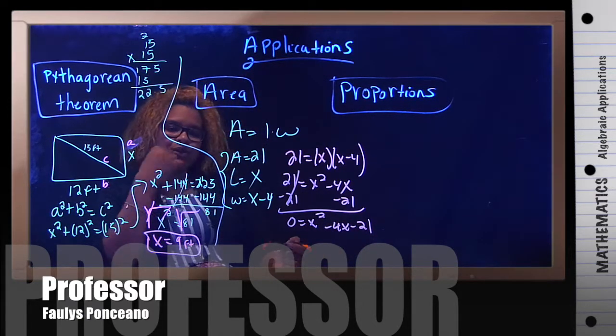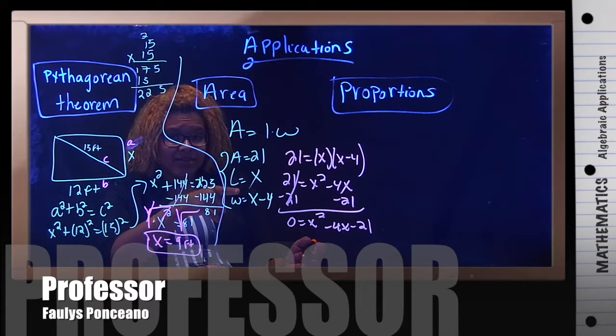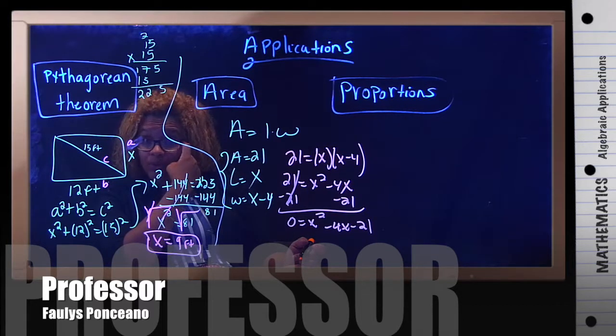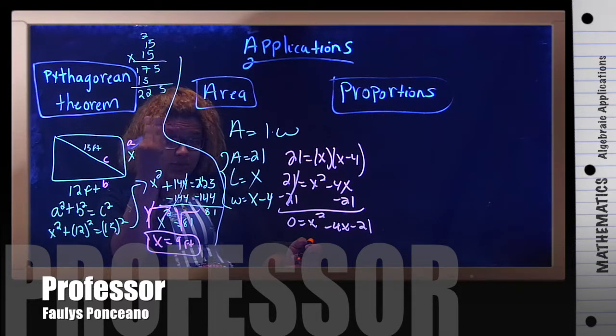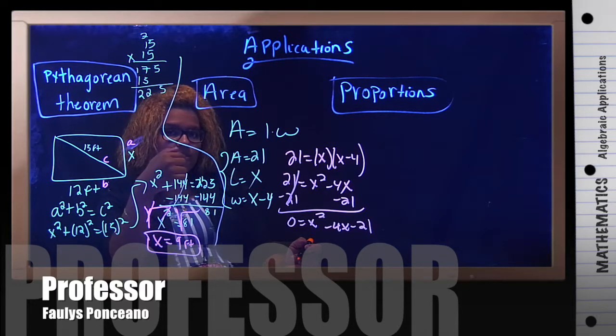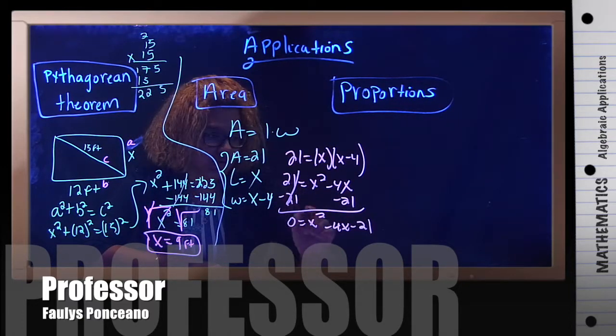So, I'm going to have 0 equals x squared minus 4x minus 21. So, now, does this look like something that we have worked with before? Yes. This is a trinomial. So, it has no GCF. And it has three terms. And you're going to factor by the AC method, which is grouping.